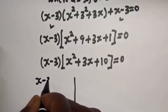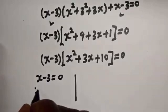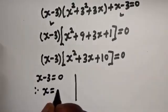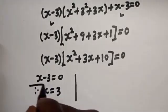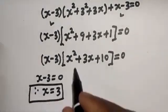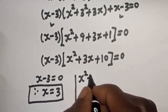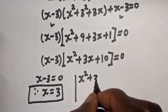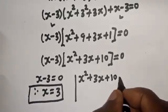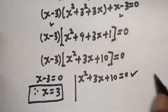There are two cases. The first case: s minus 3 equals 0, therefore s equals 3. This is the first value of s. The second case: s squared plus 3s plus 10 equals 0, which is a quadratic equation.